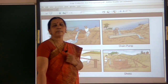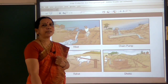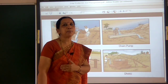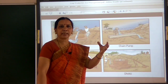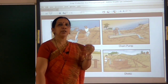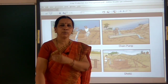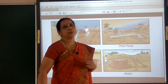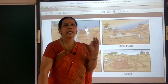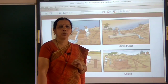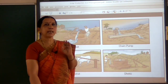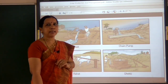Nowadays farmers are using modern methods of irrigation, such as sprinkler irrigation and drip irrigation. In sprinkler irrigation, water is sprinkled, and in drip irrigation, water is supplied drop by drop directly to the roots. These systems are very efficient and save water, and are very advantageous wherever water is less available.